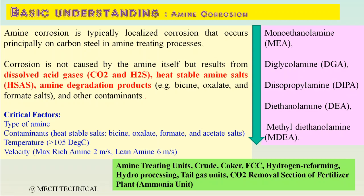Amine can cause two types of corrosion: Amine stress corrosion cracking, and Amine corrosion. We will cover Amine stress corrosion cracking later; here we focus on Amine corrosion. Amine corrosion is a type of localized corrosion that occurs primarily on carbon steels in Amine treating and Amine-used plants. Stainless steel and nickel alloys are much more resistant. The corrosion is not caused by Amine itself, but by dissolved acid gases like CO2 and H2S, heat stable salts, and other contaminants.